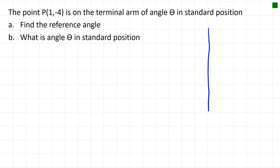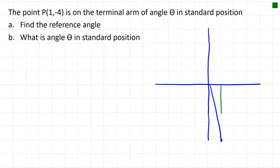Let's try another example. This time we have a point that is 1 over and 4 down, so it's in Quadrant 4. The reference angle is the angle the terminal arm makes with the x-axis — you have to draw this skinny triangle up towards the x-axis. This distance is 1 and this distance is negative 4, so we're going to use the tan ratio to calculate the reference angle.